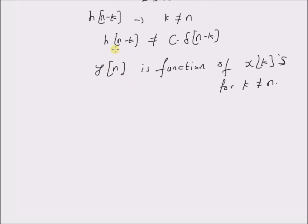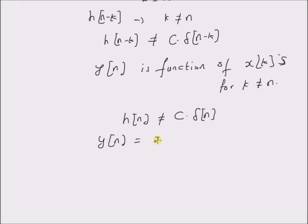Therefore, when the impulse response h of n is not equal to a constant c multiplied by the impulse signal, then y of n equal to x of n convolution with h of n means the system has memory.